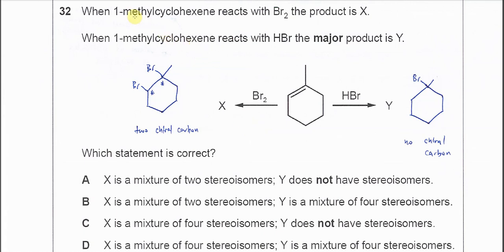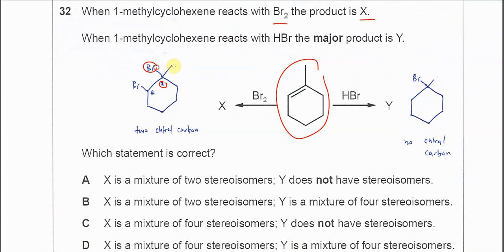When 1-methylcyclohexene reacts with bromine, it forms compound X. This compound reacts with bromine and is brominated to form this molecule. From this molecule we can see that it has two chiral carbons. The first one is this carbon, which has one, two, three, four different groups.